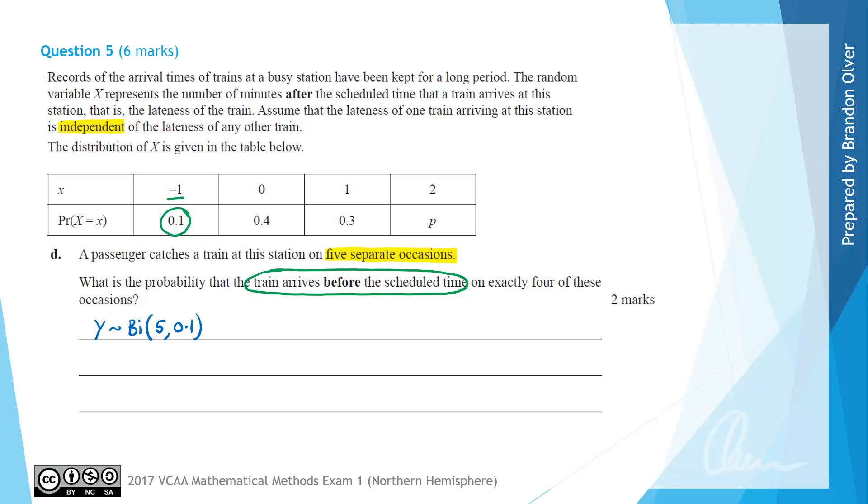So now that we know that we're dealing with a binomial distribution, we know the probability that X is equal to 4, so that is exactly 4 of these next 5 occasions,